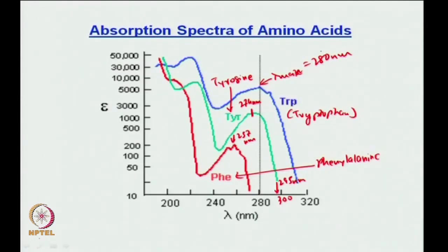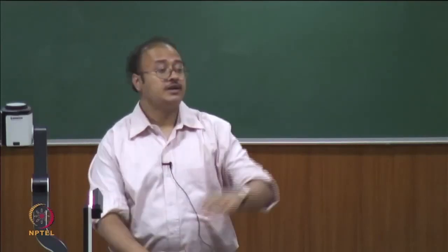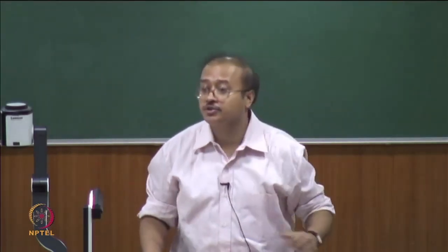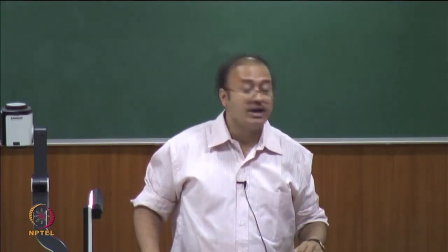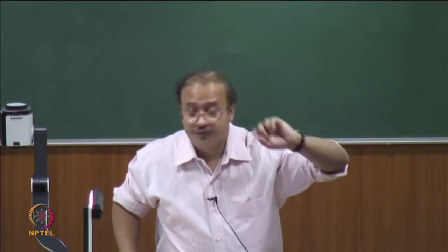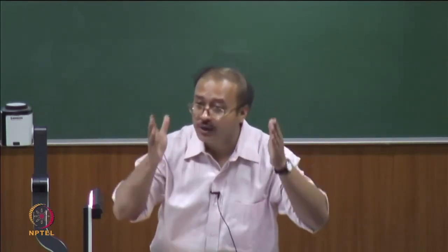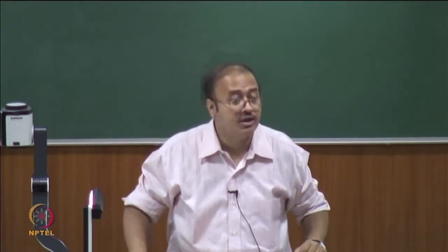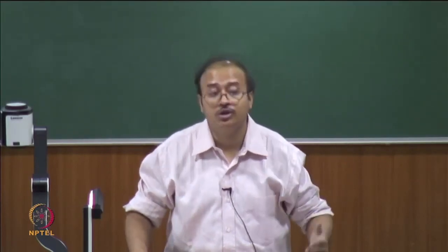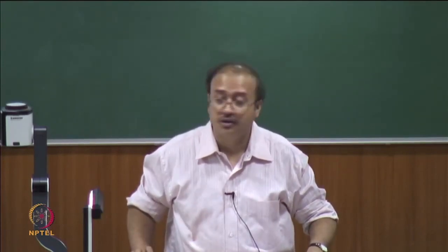That is what was shown in the previous graph. You can see tryptophan corresponds to ~5600, tyrosine to ~1450, and phenylalanine to ~220. It is just evident from the absorption spectrum. If you are going to do fluorescence studies, you cannot excite at an arbitrary wavelength — you must excite where the molecule absorbs. If it does not absorb, there will be no emission. So for any new compound you synthesize, the first step is always to take the absorption spectrum and excite within it to check for fluorescence.